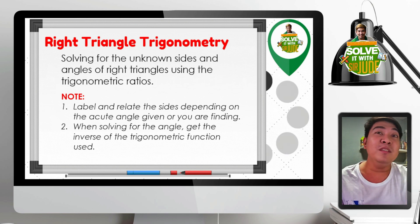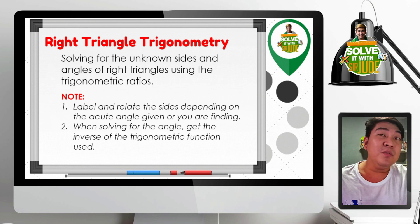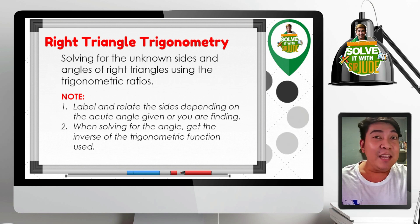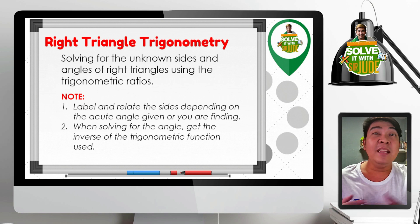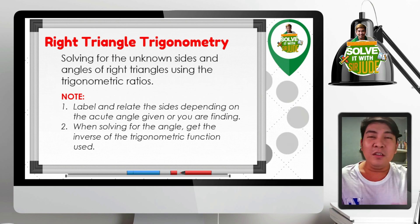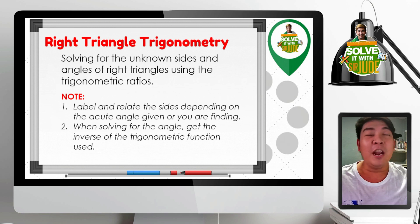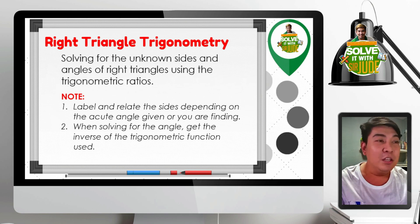For example, if sine is used in the problem, we need to get the inverse of that, which is arc sine or sine raised to negative 1. If cosine, the inverse will be cosine raised to negative 1 or arc cosine. If tangent, we have tangent raised to negative 1 or arc tangent.